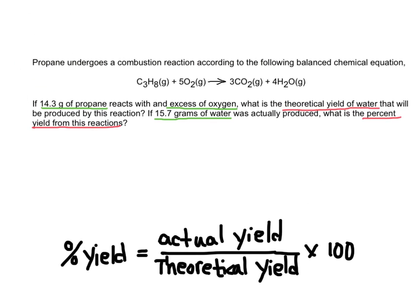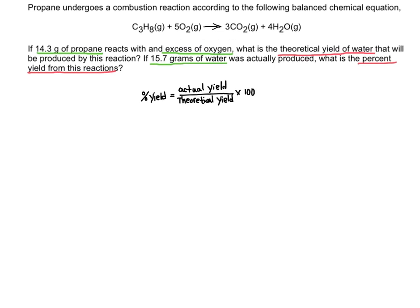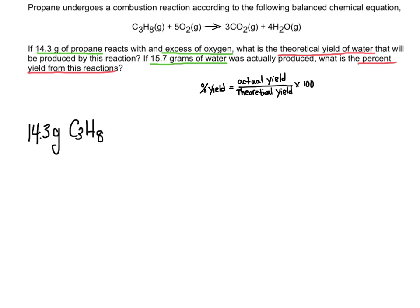So let's solve this problem using this equation. First thing I have to do is calculate the theoretical yield, and I'm going to use the amount of propane here that I started with. So we have 14.3 grams of propane. It's reacting with an excess of oxygen, which just means that we have lots of oxygen, so we don't have to worry about oxygen. I'm going to find out how much water would be produced. First thing I have to do is convert this into moles. Propane has a molar mass of 44 grams per mole, so I'm just dividing by the molar mass.